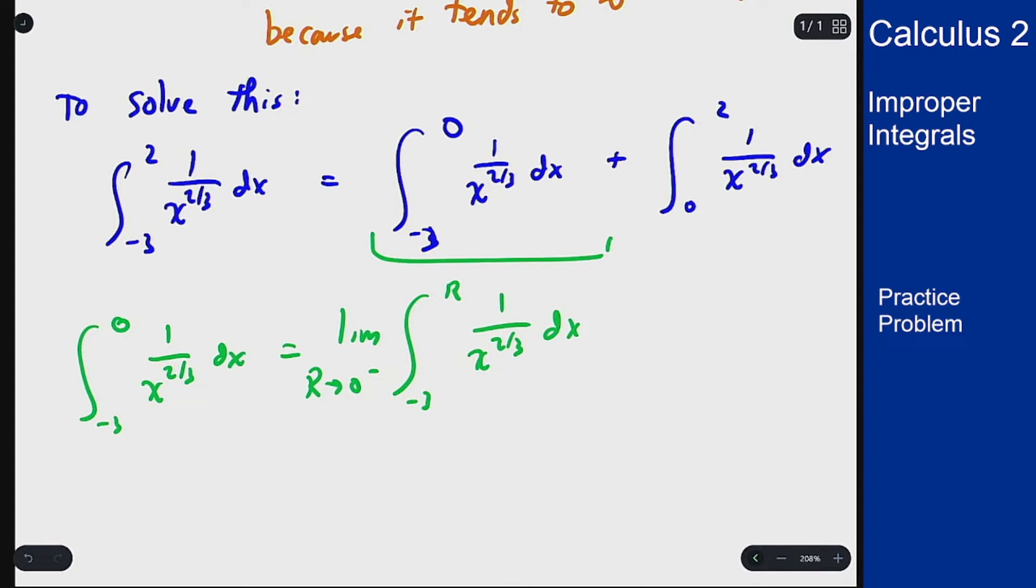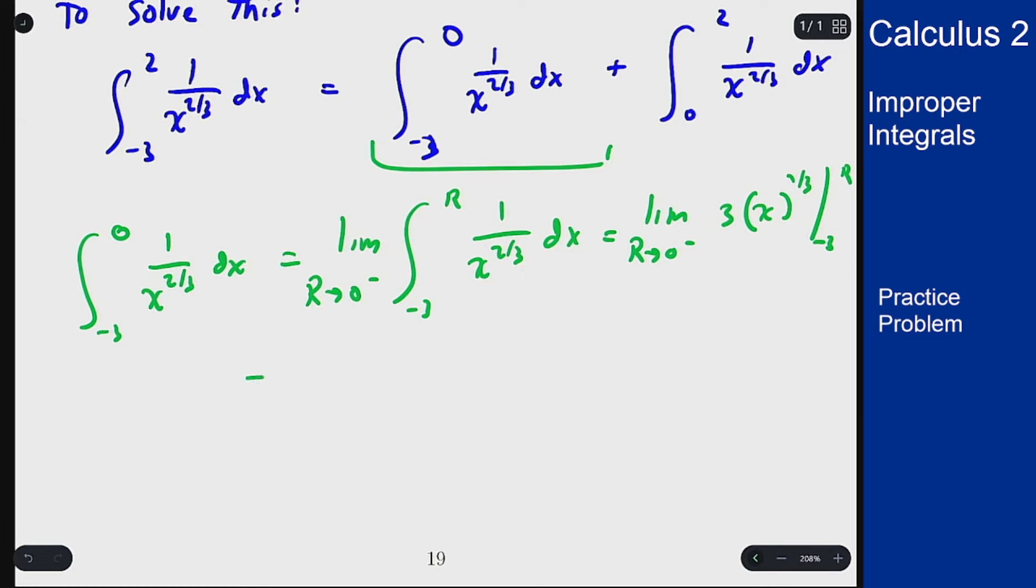We now compute this integral. If I add one to the power I get positive 1 third so I'm going to get 3 times x to the 1 third from minus 3 up to r which is limit as r goes to 0 of 3 times r to the 1 third minus 3 times negative 3 to the 1 third.